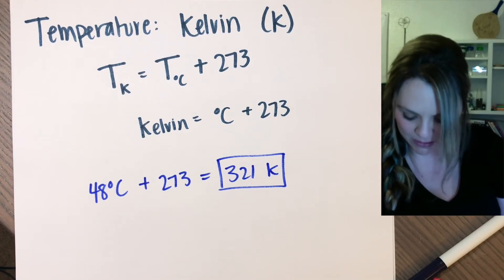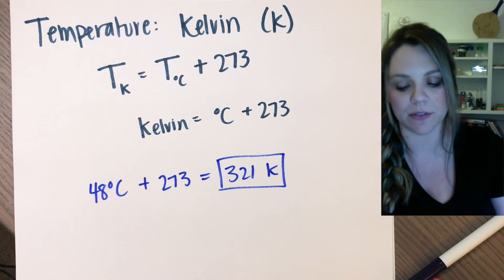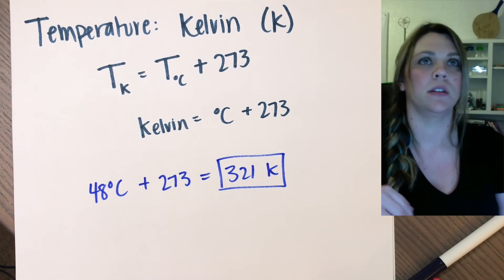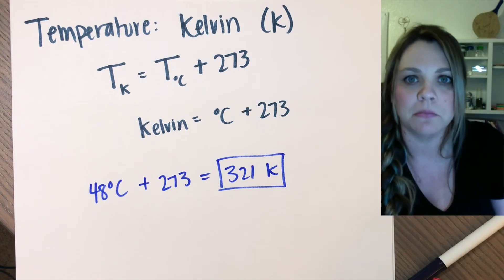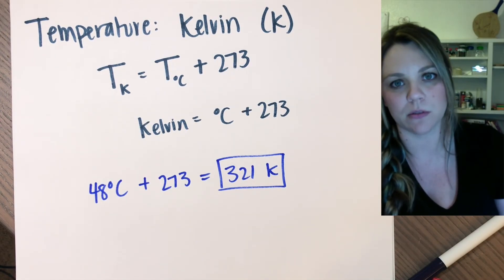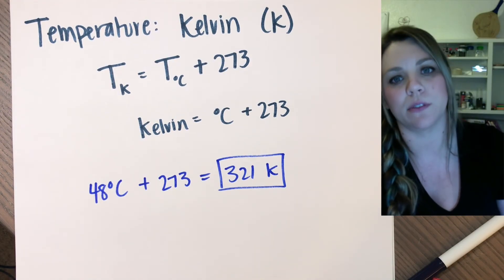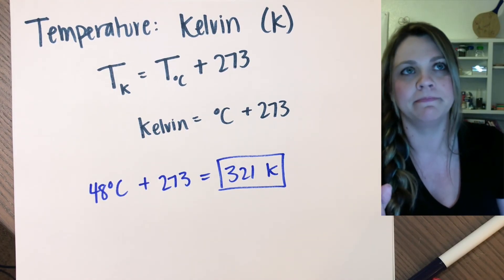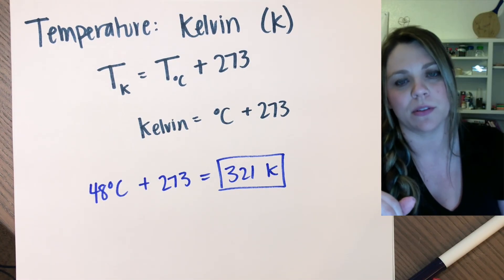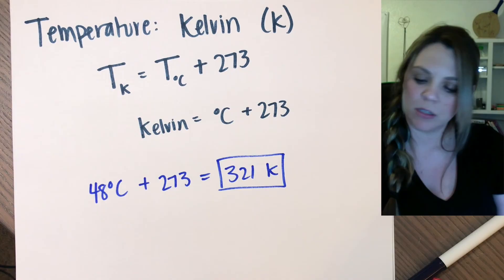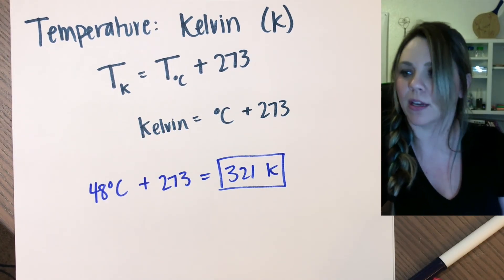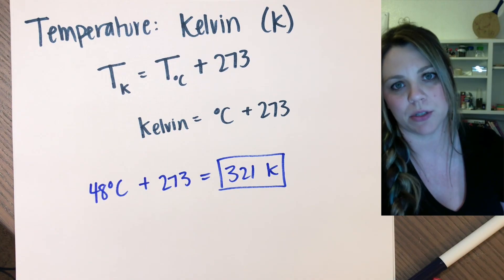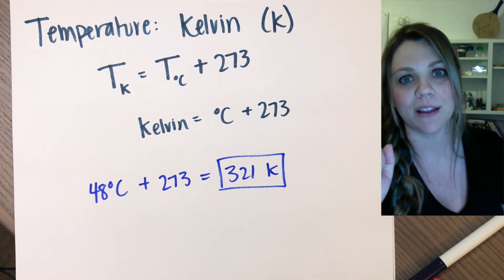Other conversions you'll need: convert grams to moles when dealing with the amount of a gas — for example, 18.2 grams of carbon dioxide converted to moles. For volume, know your metric conversions like liters to milliliters. And that's it for the introduction to gas laws — just those four variables: pressure, volume, temperature, and amount.